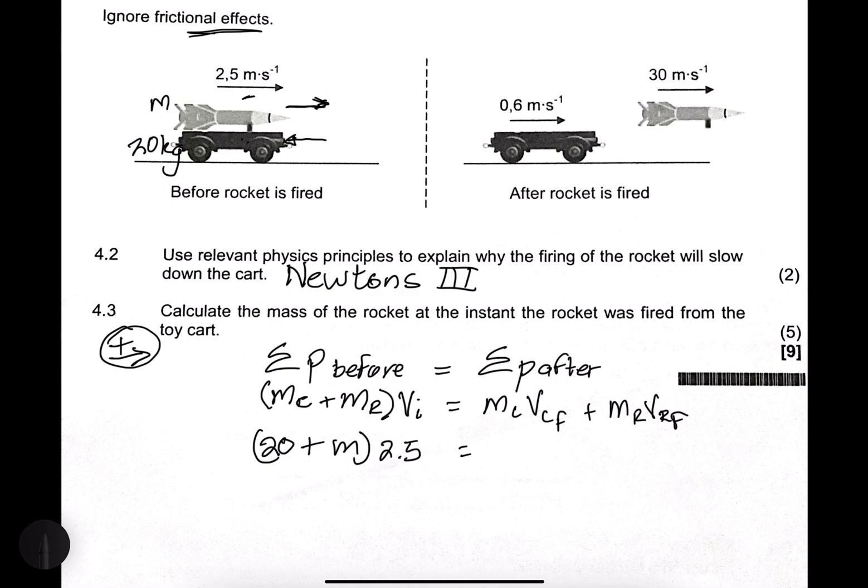And this is equal to 20, that's for the cart, multiplied by 0.6, plus in this case we've got the mass M multiplied by 30. All of those velocities are positive. And of course, what we're simply going to do is just multiply into the bracket. So we're going to say 20 times 2.5, that's 50 plus 2.5M. And on the right hand side, 20 times 0.6 that will give us 12 plus 30M.